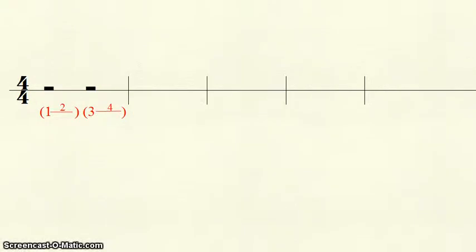Next, the half rest. Remember, half rests look like a hat. Half rests receive two beats. To note this, we will write the first beat and draw a line. We then write the second beat on that line. As it is a rest, we put the whole thing in parentheses.